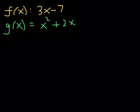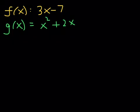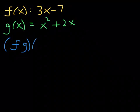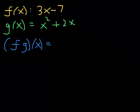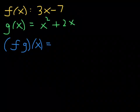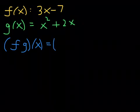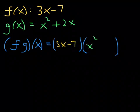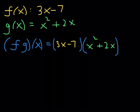Let's continue working with the same two functions f and g. I had you add them, then subtract one from the other — you can probably feel what's coming. Now I want you to multiply them together and find the product function. Why don't you pause the video and try it on your own? We're going to take function f and multiply it by function g. Function f is 3x minus 7, and function g is x squared plus 2x.